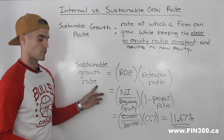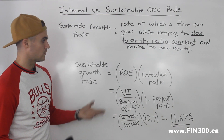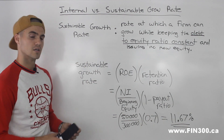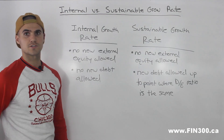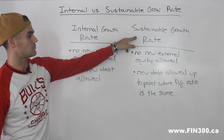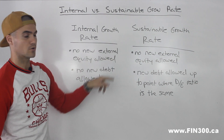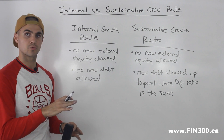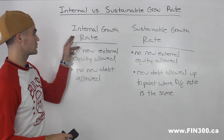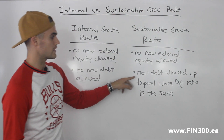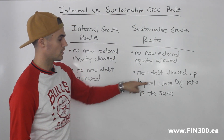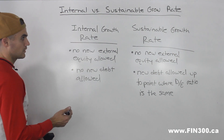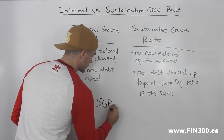To summarize: both the internal growth rate and sustainable growth rate don't allow any new external equity to be issued — any equity increase must come from retained earnings from net income. The internal growth rate allows no new debt. The sustainable growth rate allows new debt, but only up to the point where the debt-to-equity ratio remains the same as before.